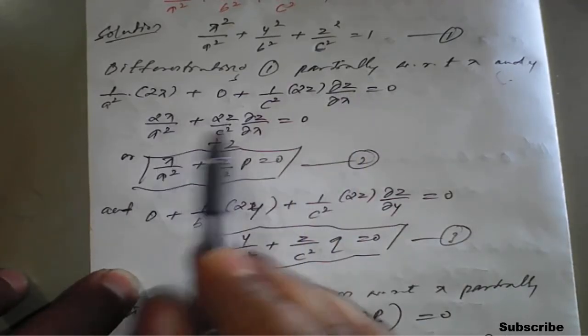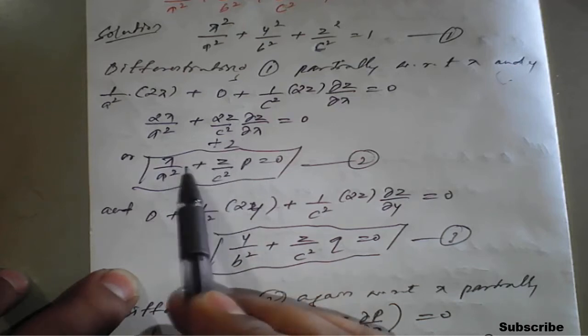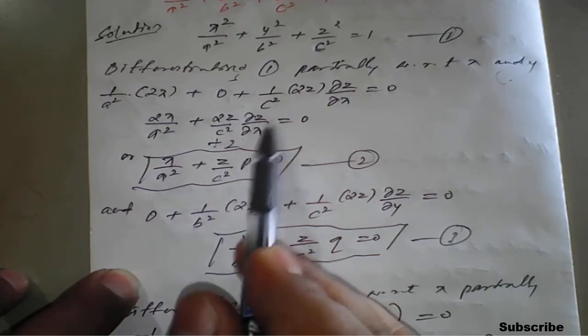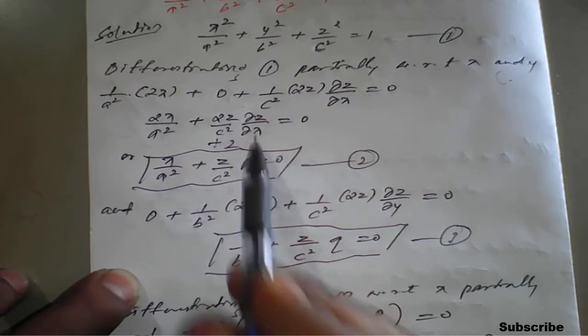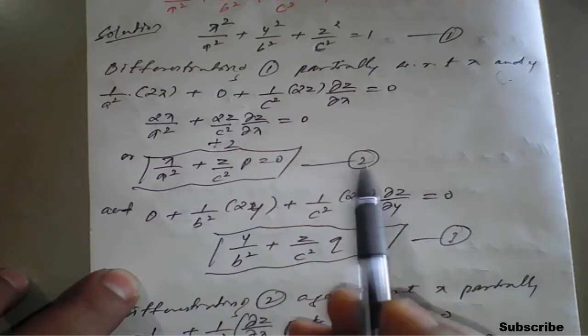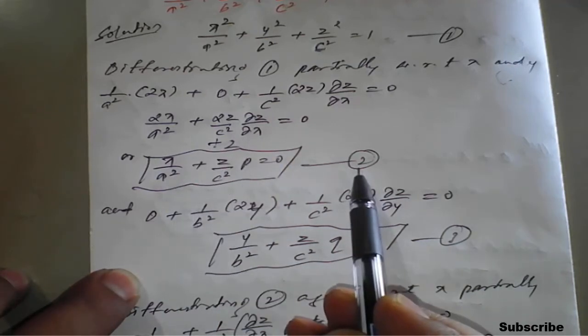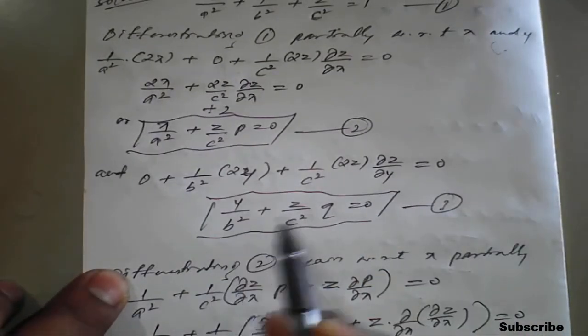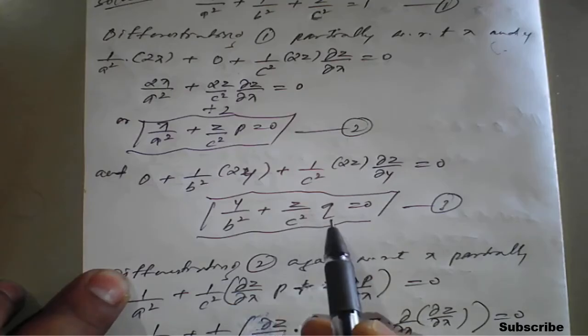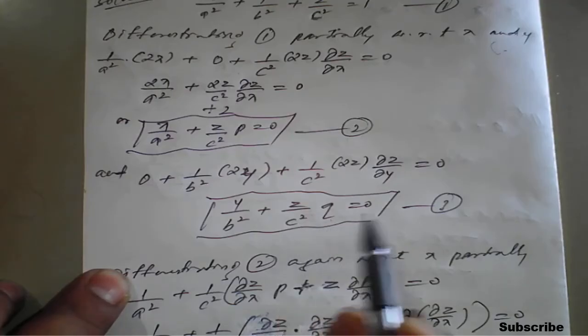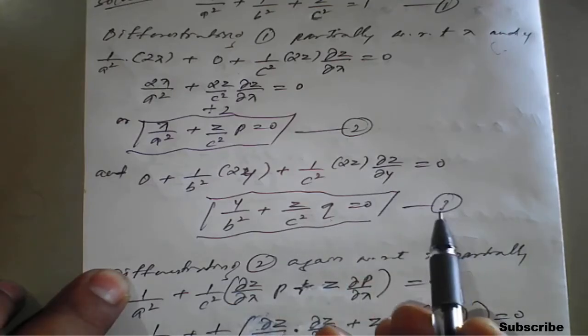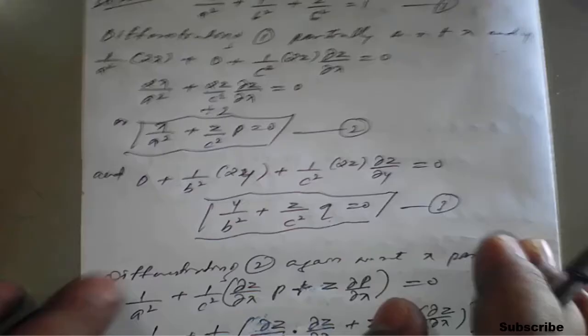Dividing through by 2 and replacing ∂z/∂x with p gives equation 2: x/a² + zp/c² = 0. Similarly, differentiating with respect to y gives y/b² + (z/c²)q = 0, which is equation 3.